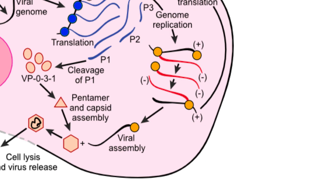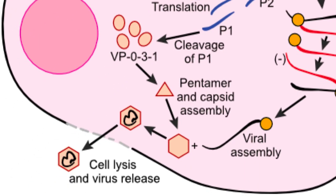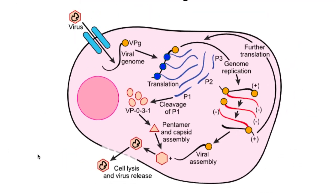As an RNA virus, rhinovirus cannot use normal host machinery for its replication, so the virus has to code for its own replicase. The replication proteins are transported to the surface of membrane vesicles where the process takes place. Replication begins with a viral priming protein, VPg, that is covalently attached to the end of the RNA genome. Replication proteins copy the positive single-stranded RNA and make a negative single-stranded RNA strand. The negative strand is then replicated to form further positive strands. Some of these lose their attached VPg and migrate back to the ribosome to serve as templates for translation. After several rounds of amplification and production of all the capsid proteins, the positive single-stranded RNA that still retains its VPg assembles with other structural proteins to form progeny virus, which is then released by lysis of the cell.